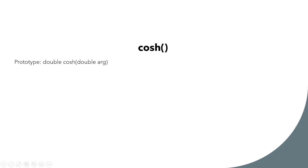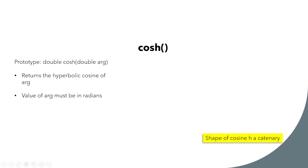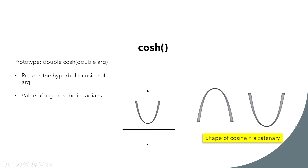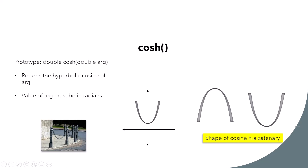We have cosh, which returns a double and takes a double as argument. It returns the hyperbolic cosine of the argument in radians. The shape of cosh is a catenary — an inverted catenary looks like an arch, while a catenary curves downward in the middle. You can see this in real life: the chain hanging between two poles forms a catenary shape, bending only due to its own weight. Similarly, a necklace forms a catenary shape.